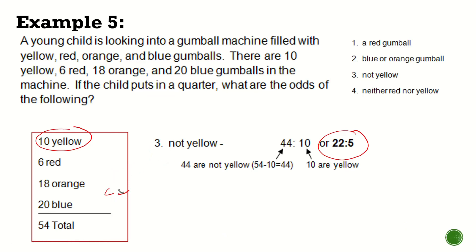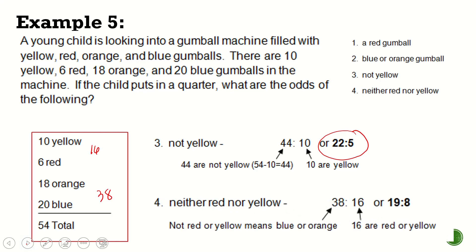The last one will be neither red or yellow. So neither red or yellow. Red or yellow is 16. Neither of those two is 38. So that means this will be 38 is to 16, which is equivalent to 19 is to 8. So these are basic examples of odds problem. I'm going to give you another video. This time, it's like level number two. So different kind of problems you will see when we talk about odds in probability. For the meantime, I hope you learned something, and thank you for watching.